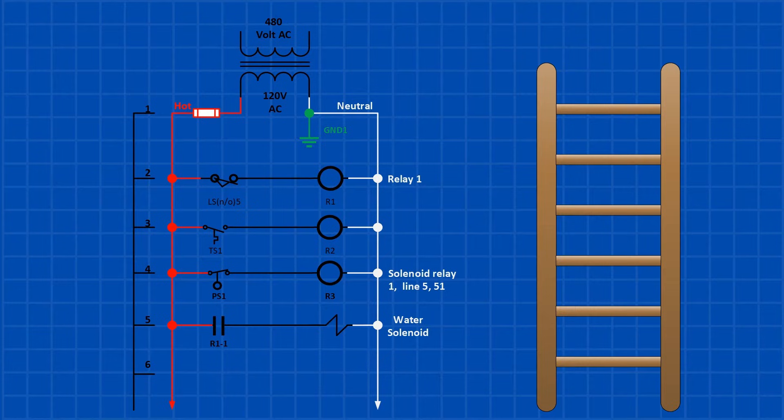Now let's look at the elements of a simple ladder diagram. First of all, it is called a ladder diagram because it resembles a ladder. Secondly, the rungs are the horizontal sections of the ladder diagram that contain both the input and output components.